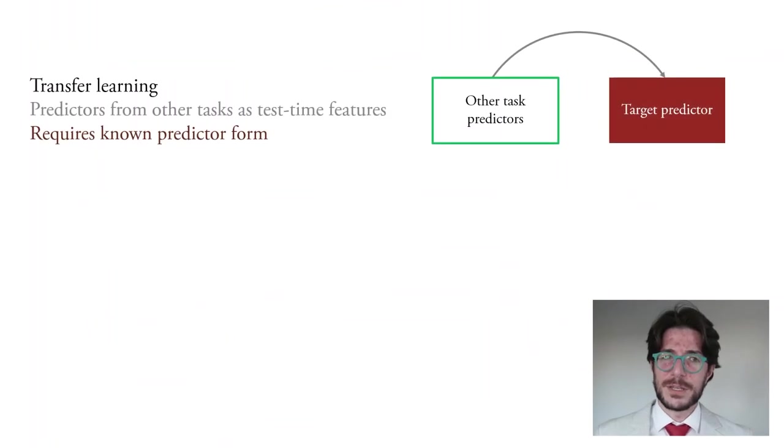So at the back of your heads, you might be thinking, if test time privileged information is a predictor from a different task, then TUPI would sound a lot like transfer learning. And TUPI is related, but distinct. Transfer learning typically assumes the form of the predictor is the same. Say, if one predictor was a neural network and another was a support vector machine, then oftentimes it can be unclear how to transfer. In the TUPI problem, the form is not assumed, and so the problem is more general.